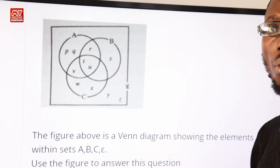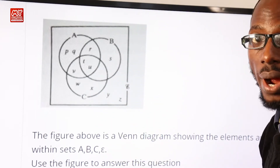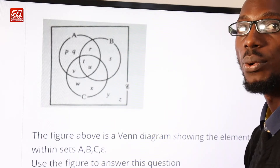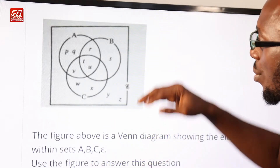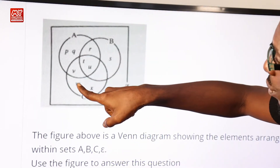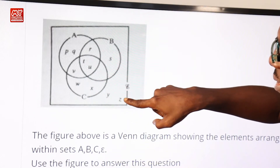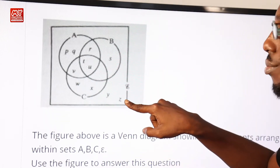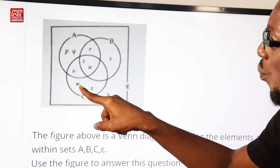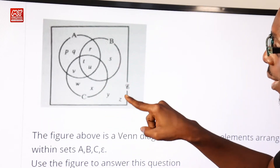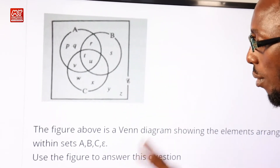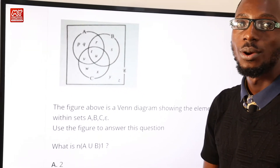Y and Z are included because complements represent elements not found in A union B but present in the universal set. We are not asked to list the elements, but to count them: W, X, Y, Z — that is 4 elements. So the number of A union B complement is 4, making option C correct.